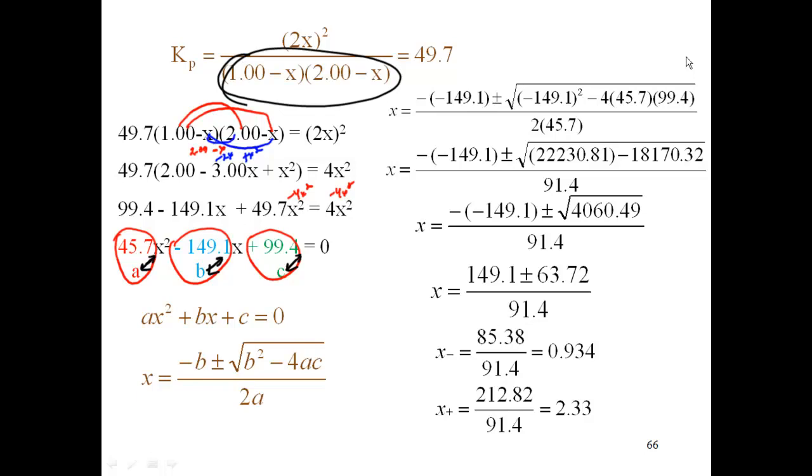If I only start off with 1 atmosphere, I can't consume 2.33 atmospheres. I can only consume as much as I have. So if I plug that number in to my 2 minus X or my 1 minus X, I'm going to get a negative number, which is not realistic because that's telling me I'm consuming up more than I had to start with.